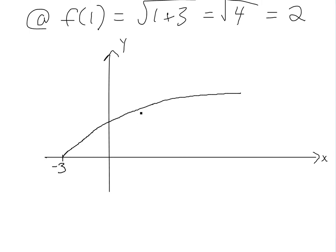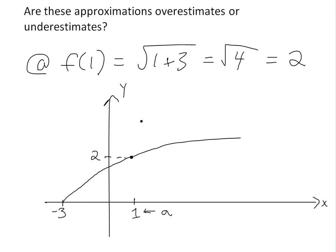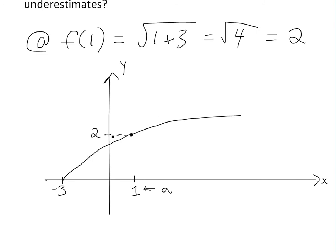It curves out like that, and at x equals one — which is our value a — we get the value two. So f(a) equals two. Now to get the linearization, we draw a tangent line across the curve here, something that will look like this once we apply the derivative.